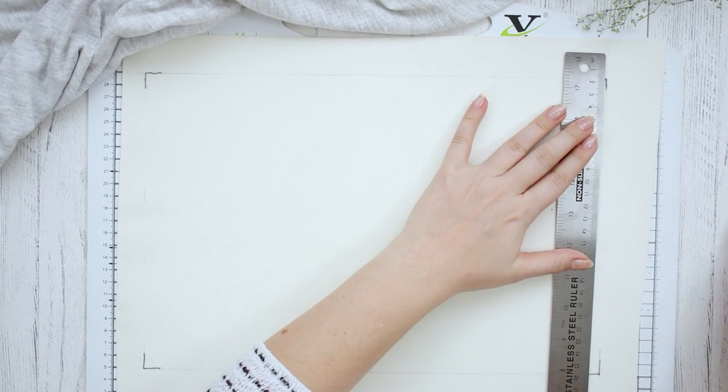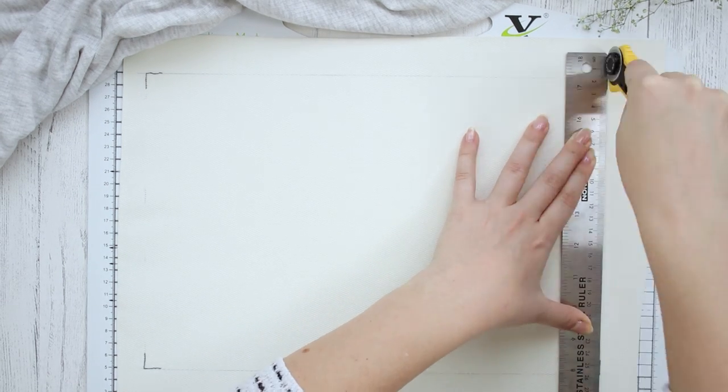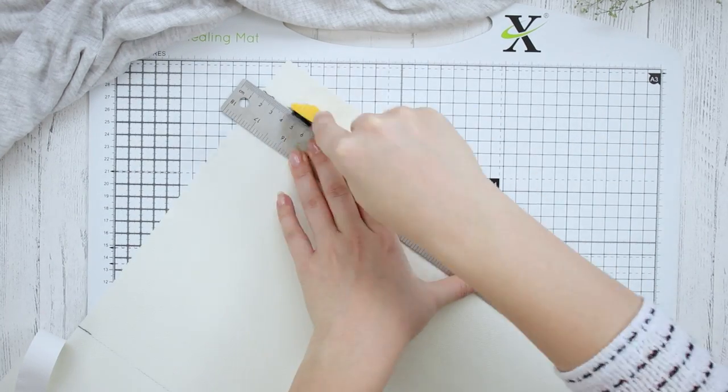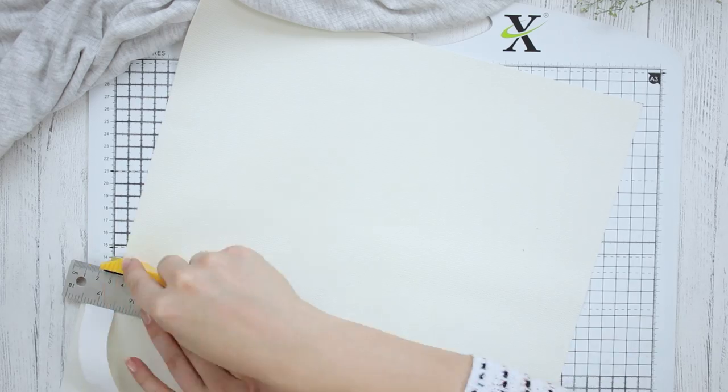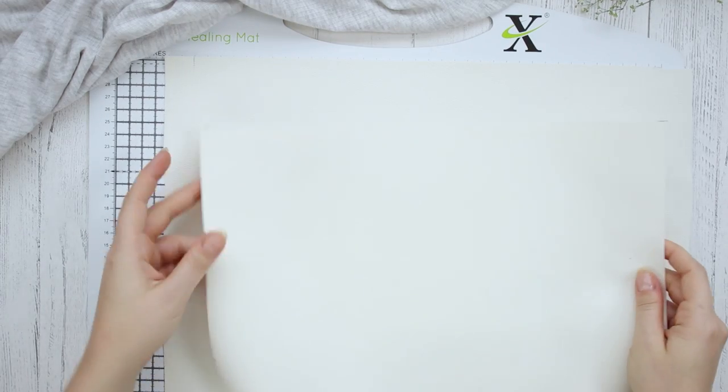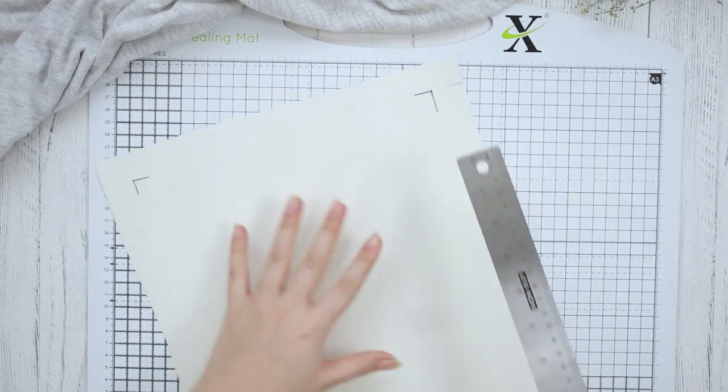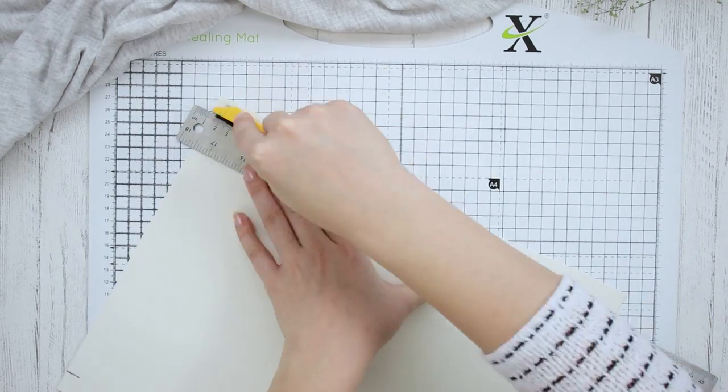Now it's time to carefully cut out the piece of material and make sure you don't throw away the excess material because we're going to use that later on. Then I'm just going to measure this again and cut out one more piece because I want to double it up. But if your material is thick enough, then you don't need to do this.